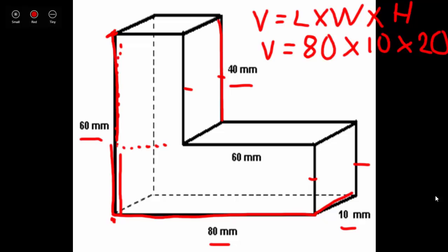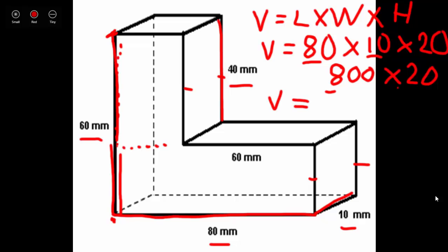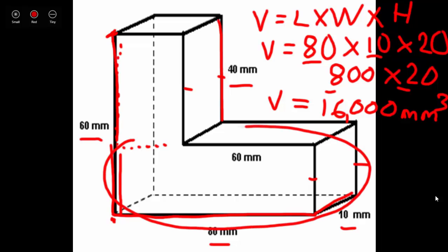Now we have all dimensions for the bottom prism. First: 80 times 10 equals 800 — think of 8 times 1 and add two zeros. Then multiply the area of the base by the height: 800 times 20. The simple problem is 8 times 2 equals 16; add three zeros. The volume of the bottom rectangular prism is 16,000 cubic millimeters.